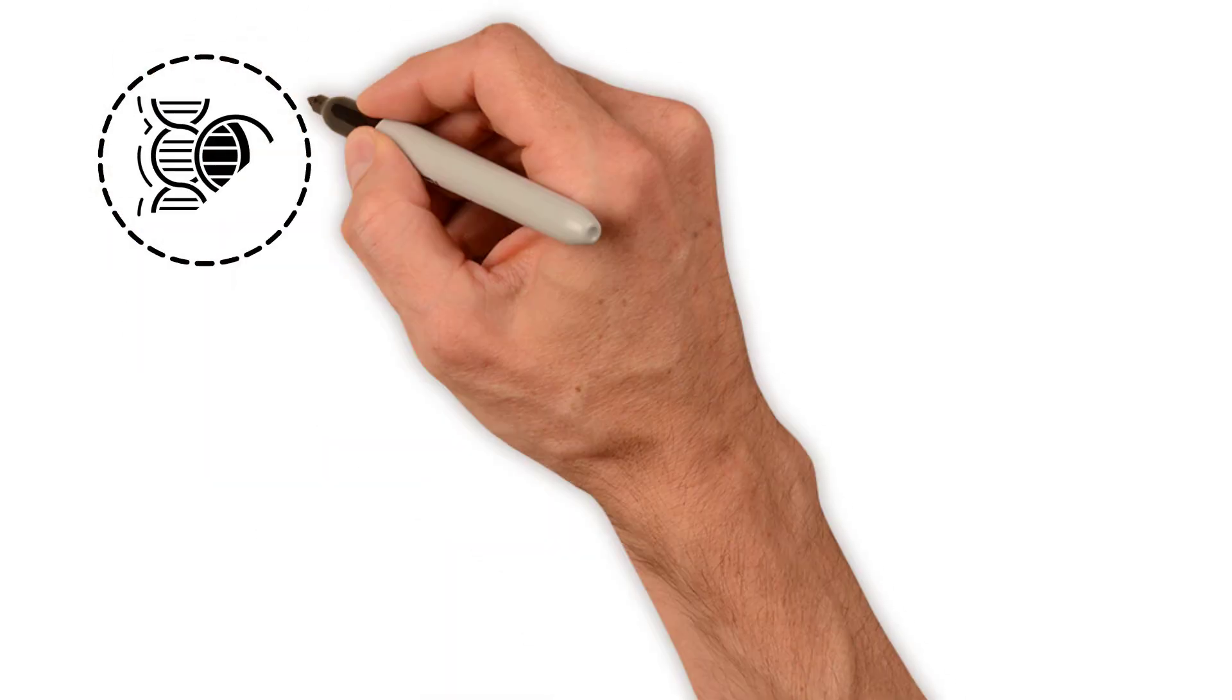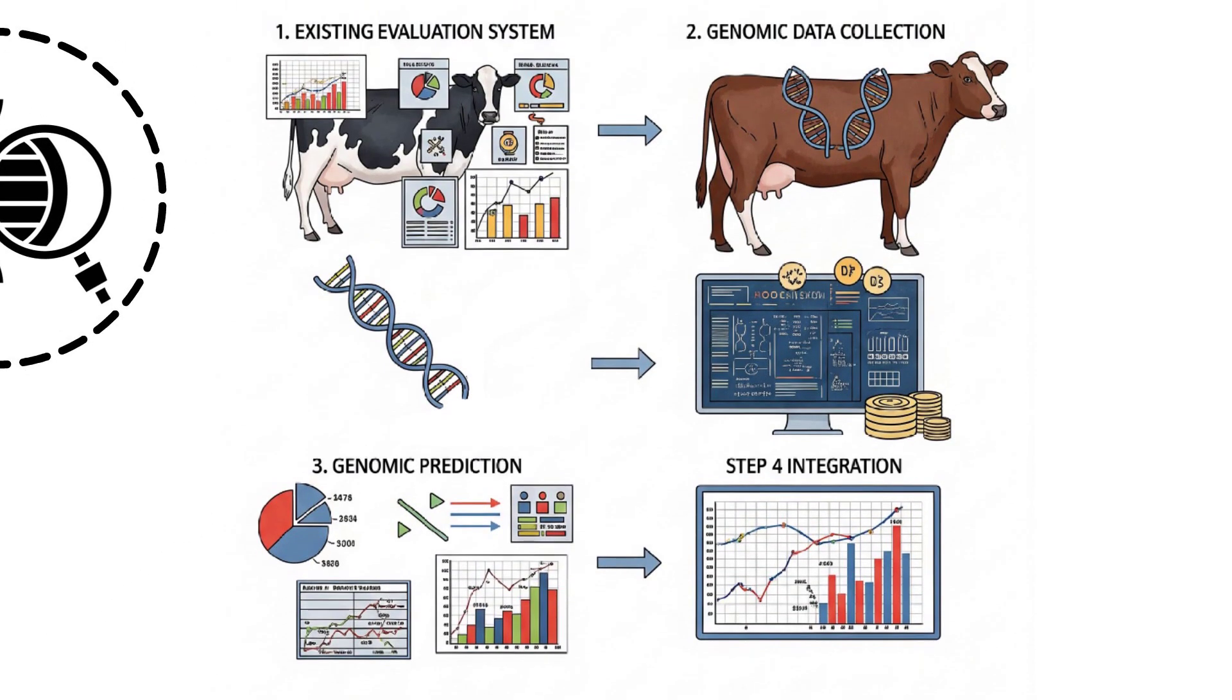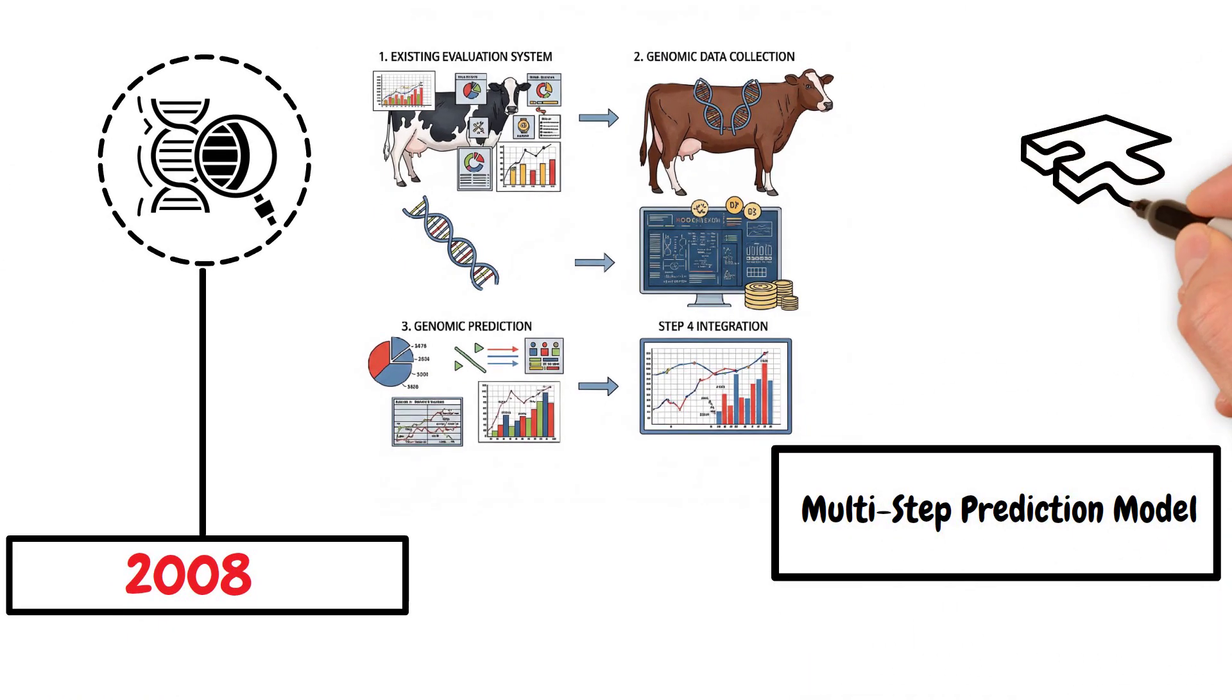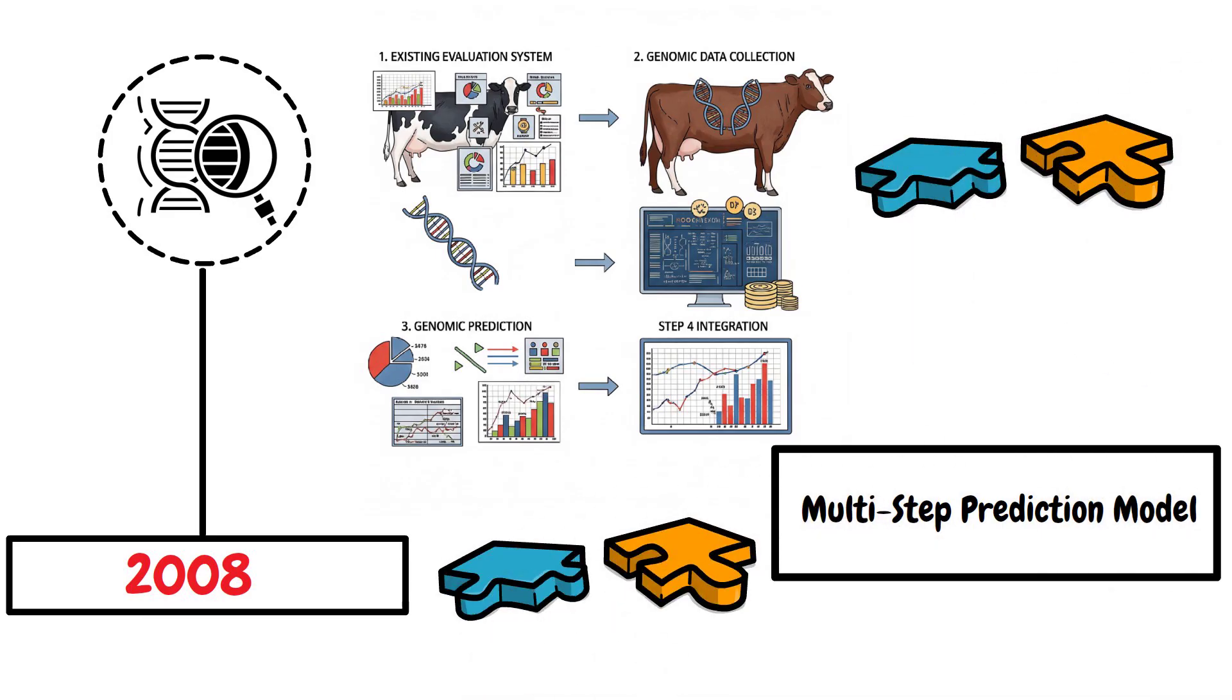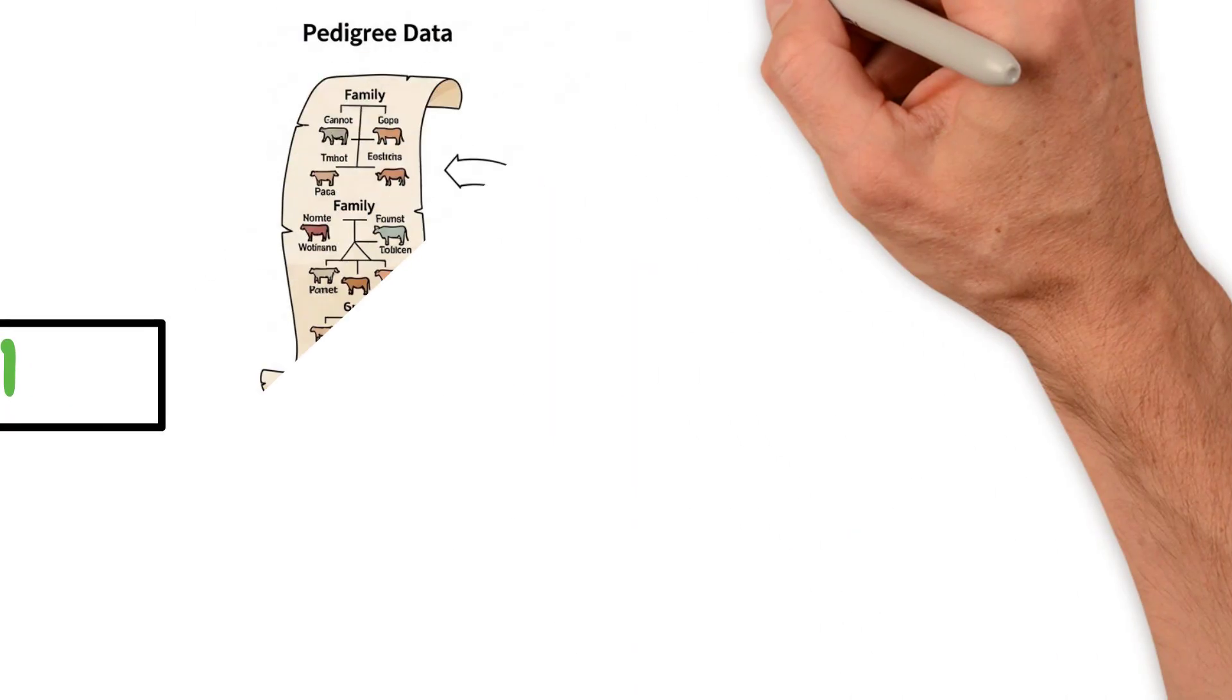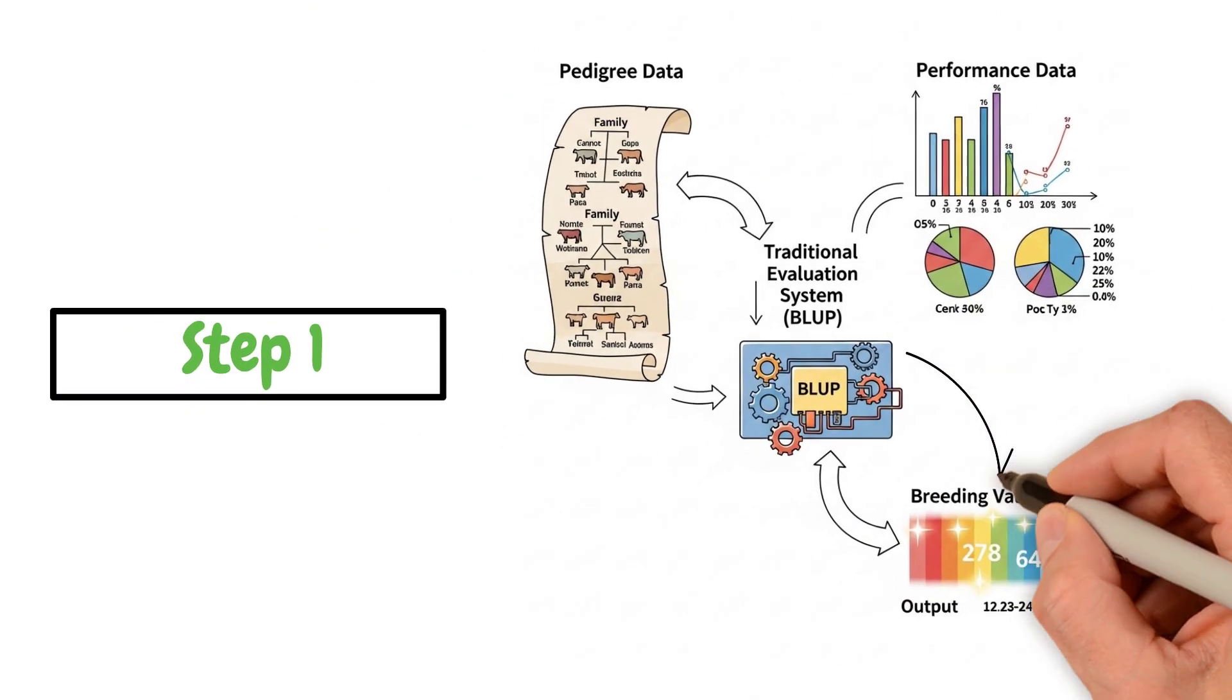When genomic prediction was first introduced in 2008, it was added on top of our existing evaluation system in a series of steps. This created what we call a multi-step model. Generally, there are four steps in our current multi-step genomic prediction. Let's break it down. Step 1: Pedigree and phenotypes go into a traditional prediction model to calculate breeding values for all animals.